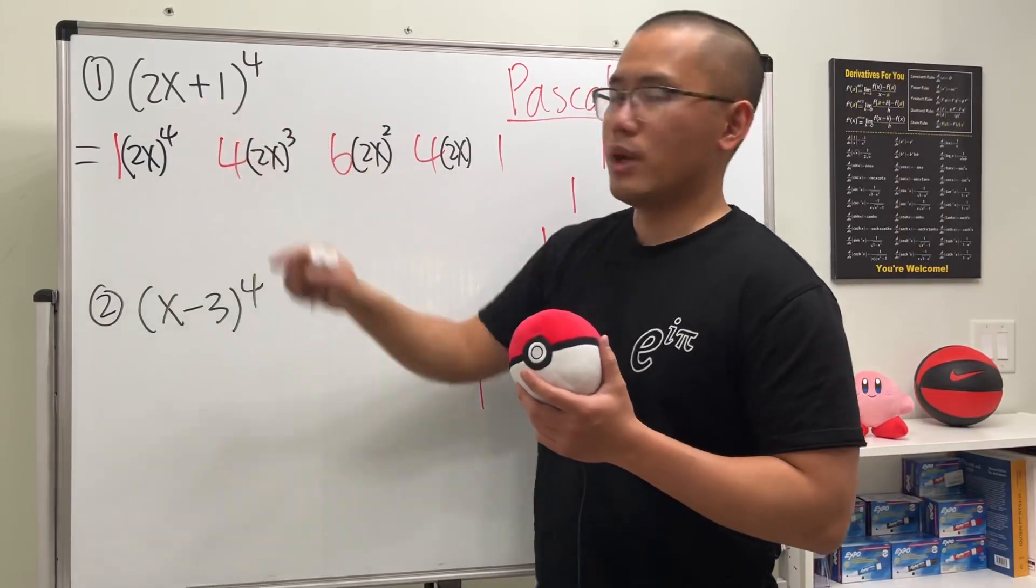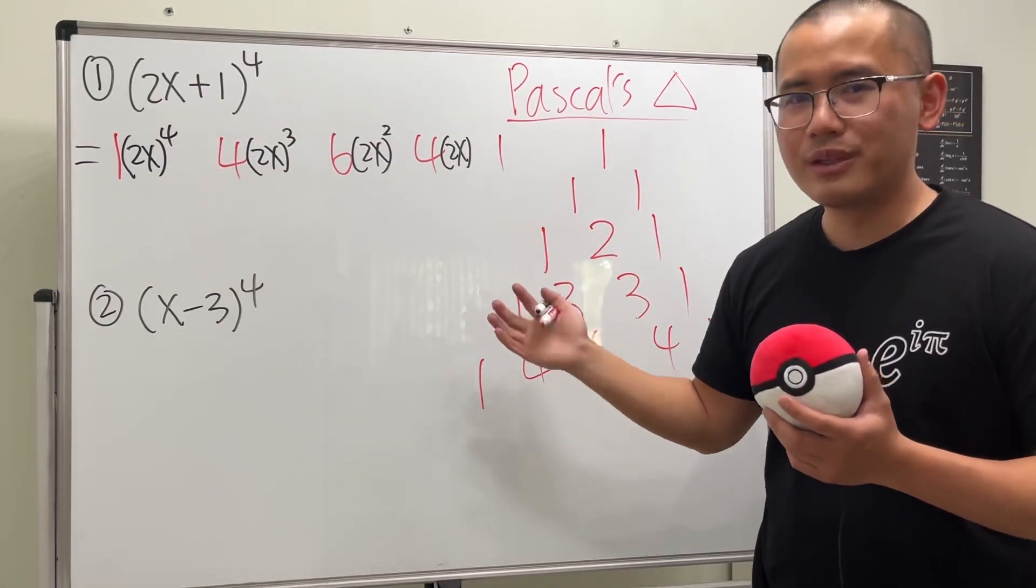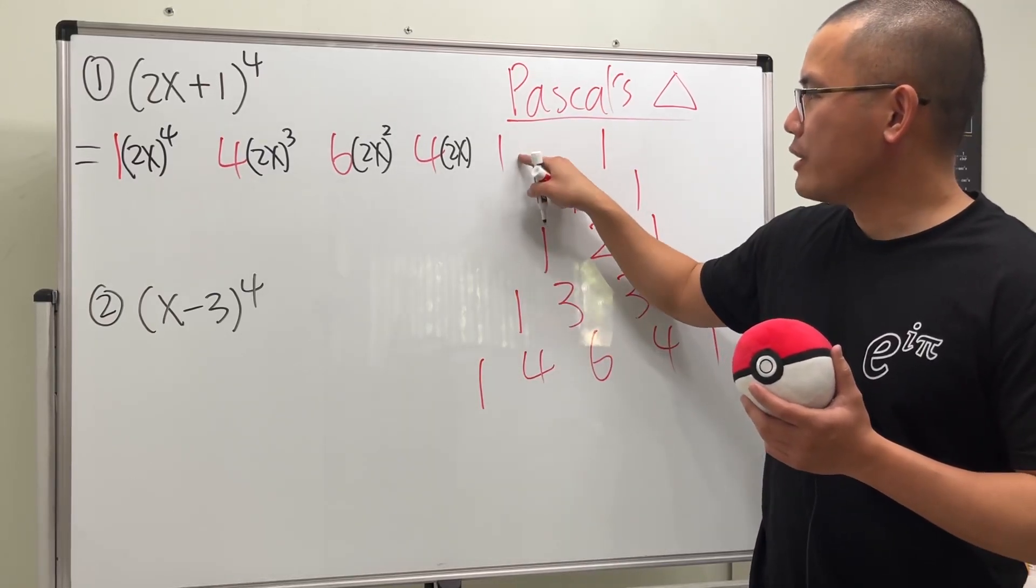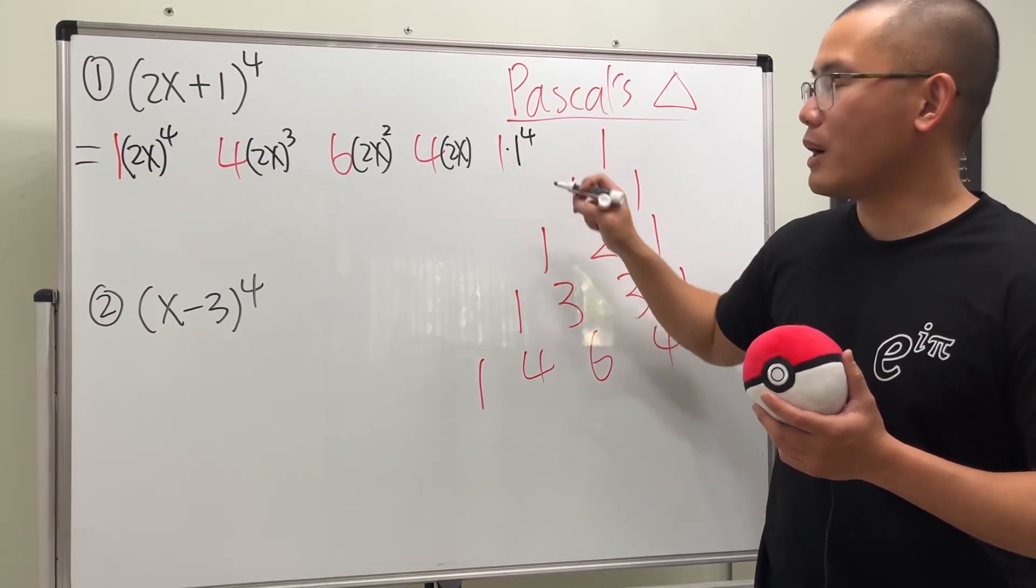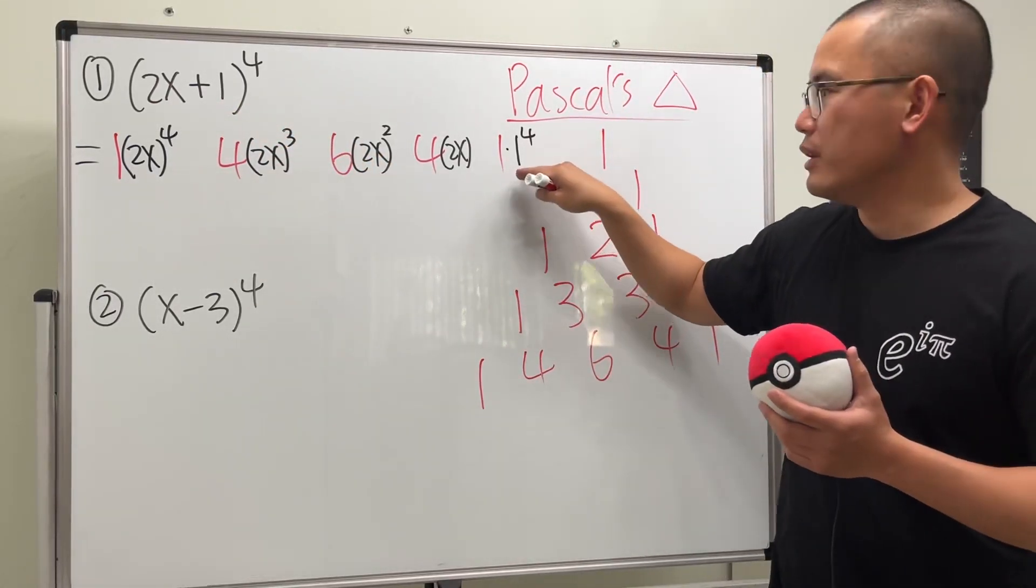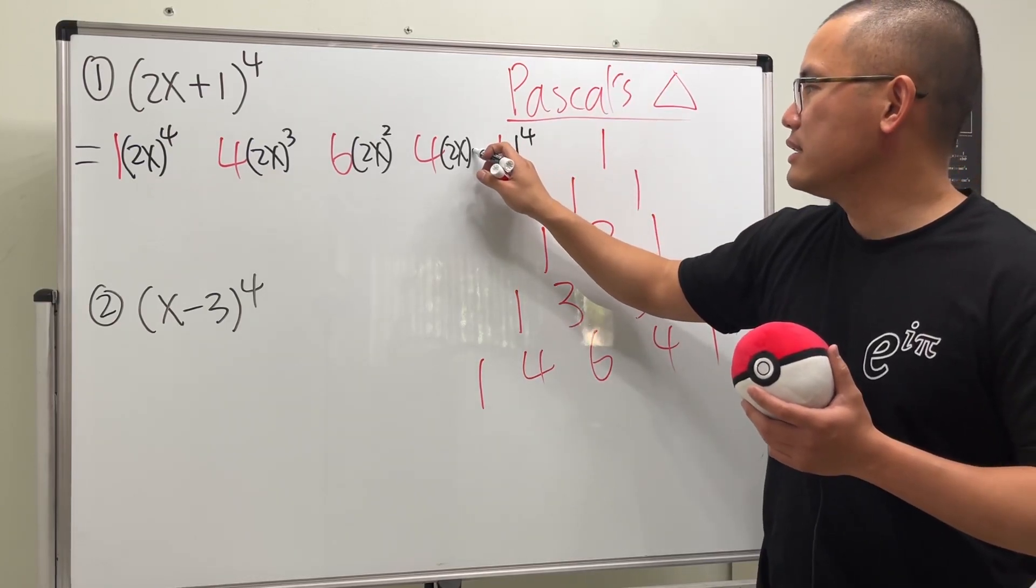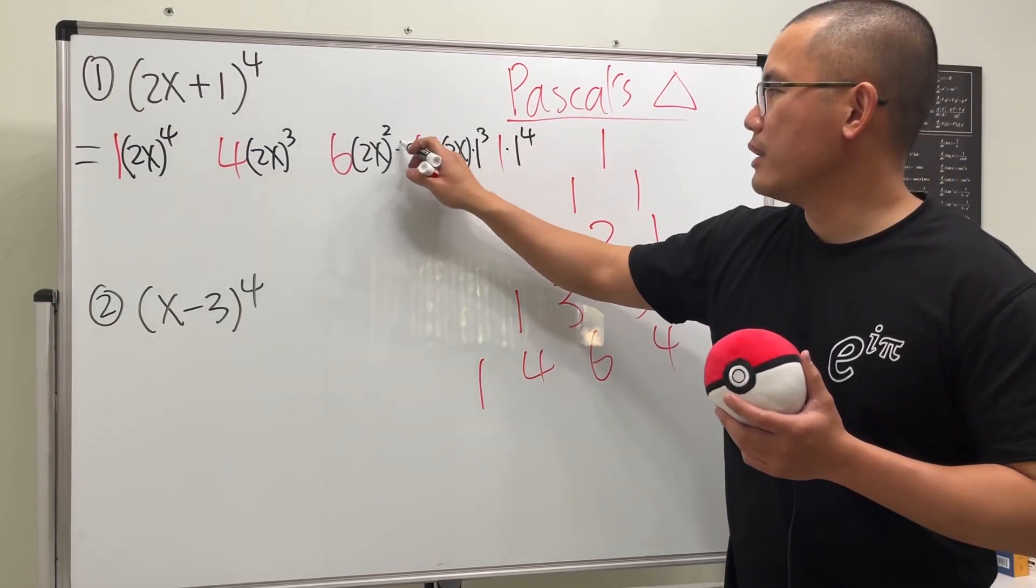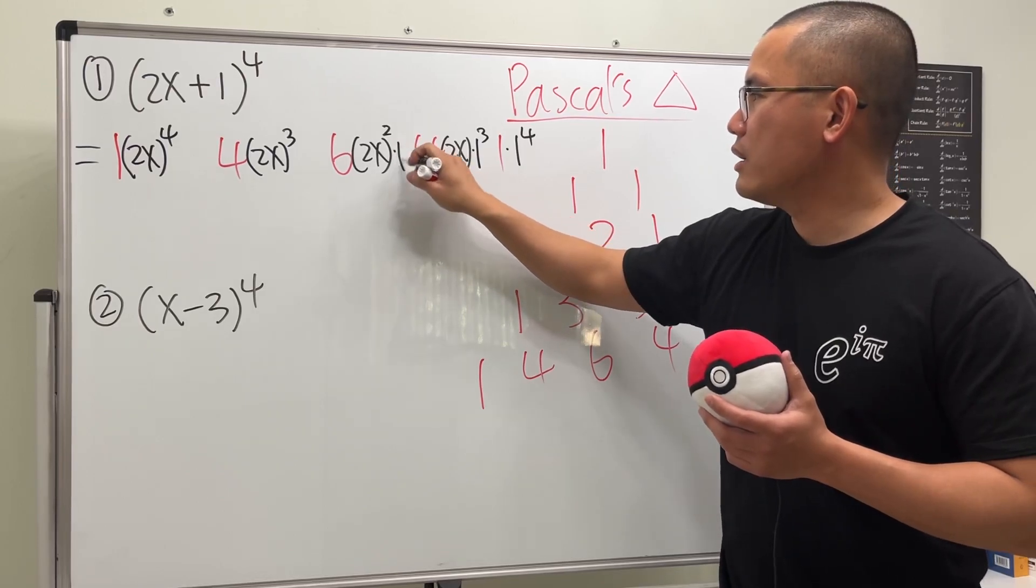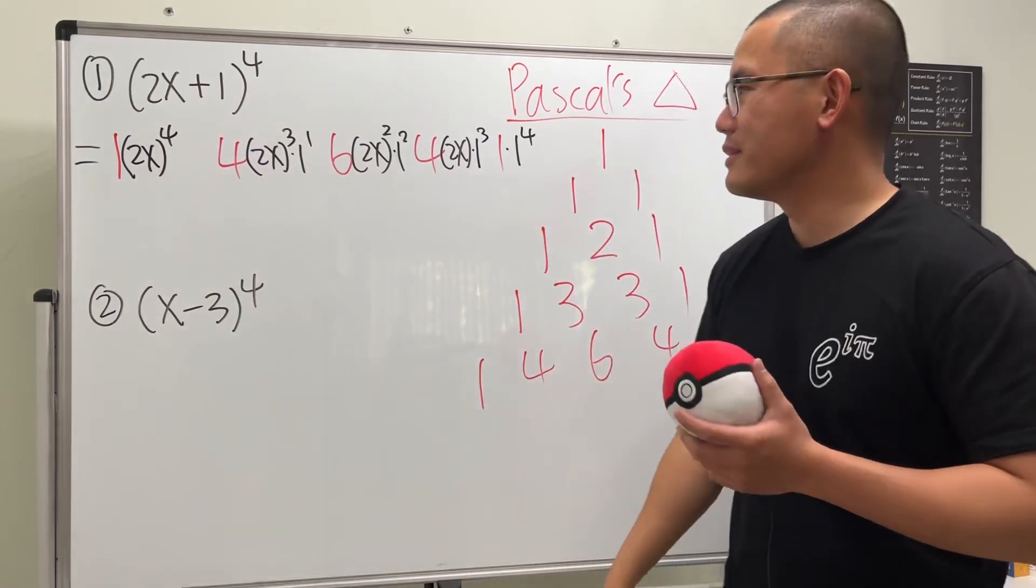And then, here we have the plus one. Well, I'm going to do this. It's redundant. But I want to show you guys how it works. We are going to start right here and we are going to multiply by 1 to the fourth power. Whatever this number is, you start right here. And then you do that number to the fourth power. But it's always 1 anyway. And this is 1 to the third power. And then 1 squared. And then 1 to the first. And then 1, no 1, doesn't matter.